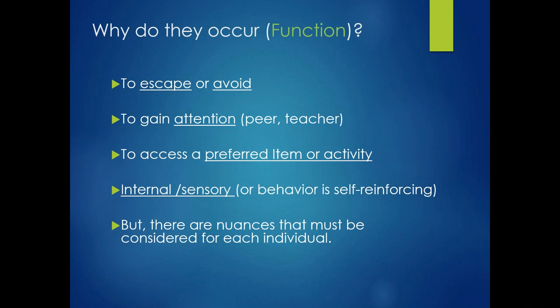Why do these behaviors occur? Here are possible options — this part is very important. By looking at the behavior, we don't know the function; we need to explore and identify it. Sometimes behaviors occur to escape or avoid a demand. Sometimes behaviors occur to gain attention from peers or adults, or to access a preferred item or activity. And sometimes problem behaviors occur for internal or sensory purposes — the behavior might be self-reinforcing in that case, and those are more challenging to address. Many problem behaviors occur for multiple reasons or functions, which makes it even more complicated.